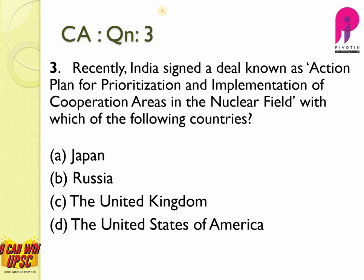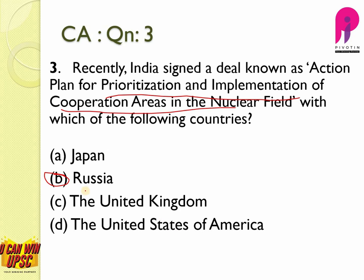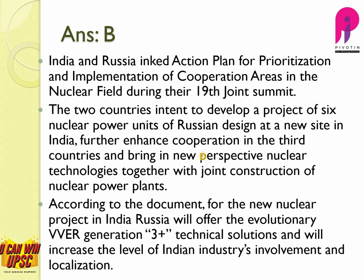Question number 3. India signed a deal known as the Action Plan for Prioritization and Implementation of Cooperation Areas in the Nuclear Field with which of the following countries? In the nuclear field, India majorly cooperates with Russia because Russia is the only country which has given its technology and nuclear power plants to India. So the answer is B, Russia.